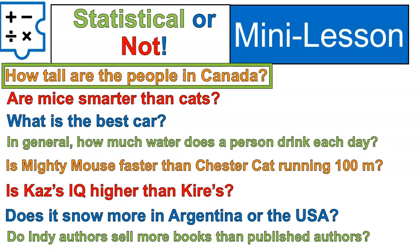Are mice smarter than cats? This question would require that you gather a whole bunch of data and make a conclusion based on it. The data would definitely be a variable set of data because one mouse might be smarter than one cat, and one cat might be smarter than one mouse.